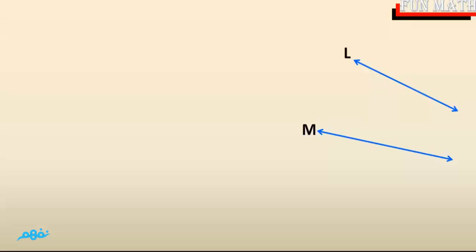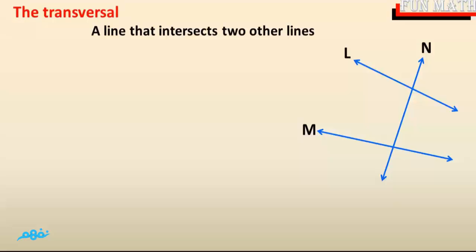This lesson consists of two cases. First case: we draw two straight lines L and M, where L is not parallel to M, then draw a transversal N. Can I ask you what is a transversal? The transversal is a line that intersects two other lines.